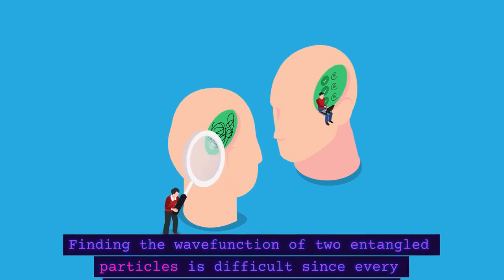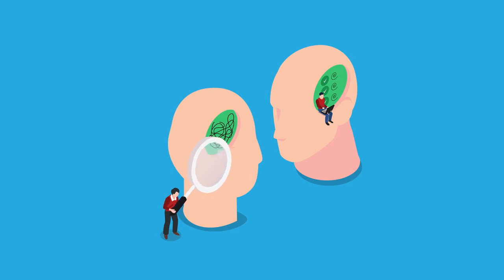Finding the wavefunction of two entangled particles is difficult since every measurement of one results in an instantaneous change in the other.